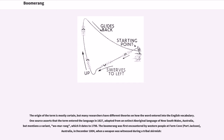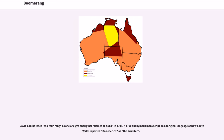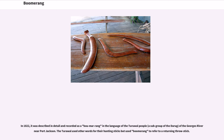The boomerang was first encountered by Western people at Farm Cove, Port Jackson, Australia, in December 1804, when a weapon was witnessed during a tribal skirmish. David Collins listed 'Womerang' as one of eight aboriginal names of clubs in 1798. A 1790 anonymous manuscript on aboriginal language of New South Wales reported 'boomerang' as the word used for their hunting sticks, but used boomerang to refer to a returning throwstick.